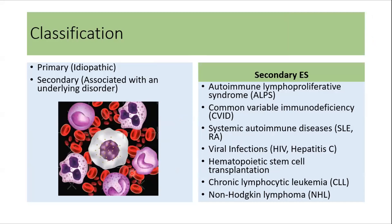Evans syndrome can be classified into primary and secondary. If the cause is unknown, it is labeled as primary Evans syndrome. However, if it is associated with any underlying diseases, it is considered secondary. Causes of secondary Evans syndrome include autoimmune lymphoproliferative syndrome, common variable immunodeficiency, other autoimmune diseases like SLE and RA, viral infections like HIV and hepatitis C, hematopoietic stem cell transplantation, non-Hodgkin's lymphoma, and chronic lymphocytic leukemia.